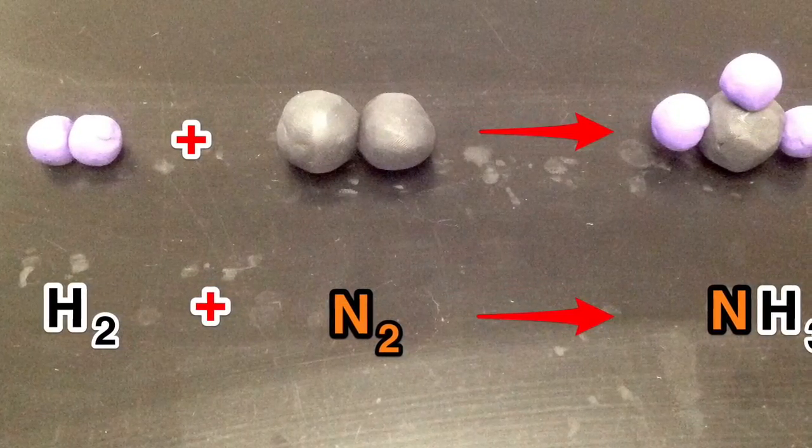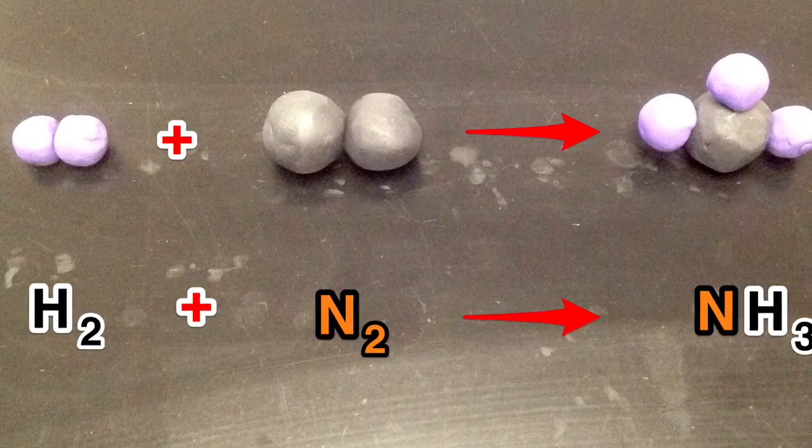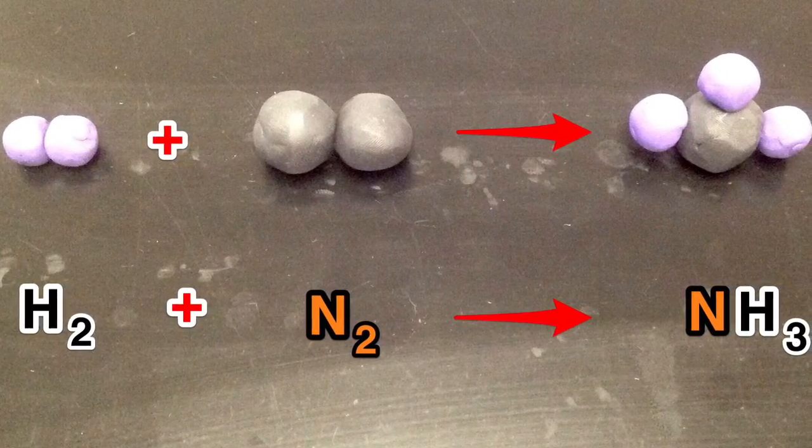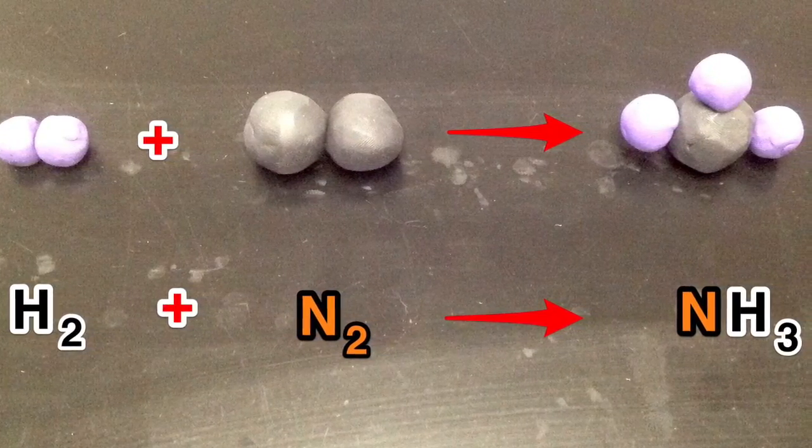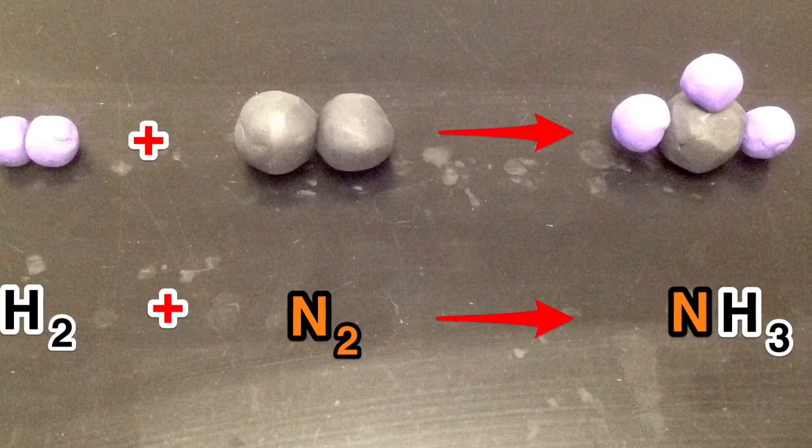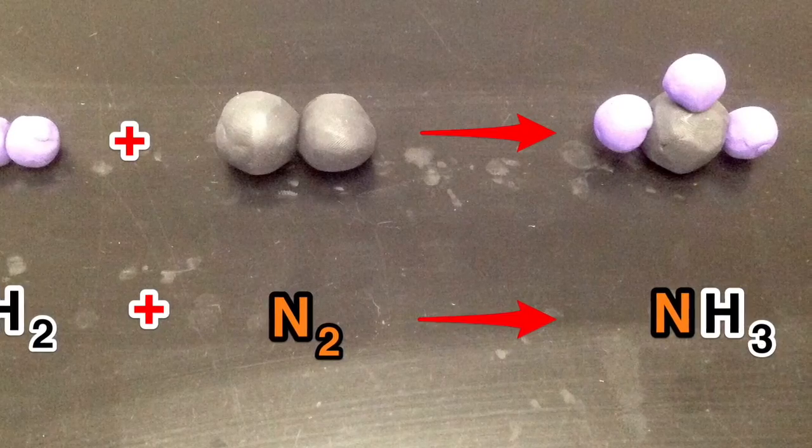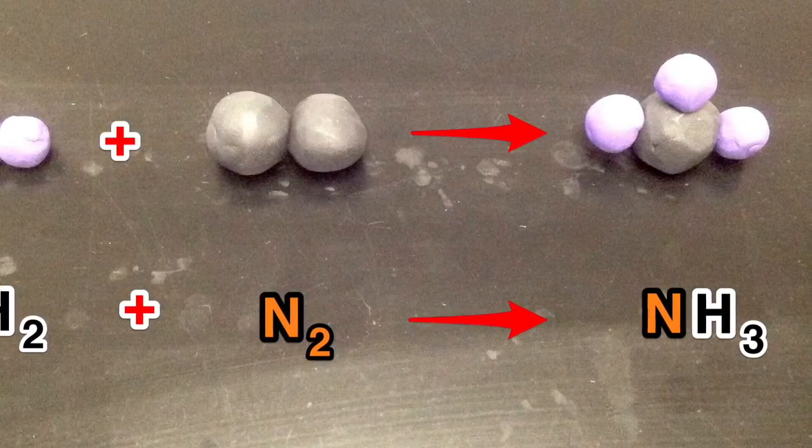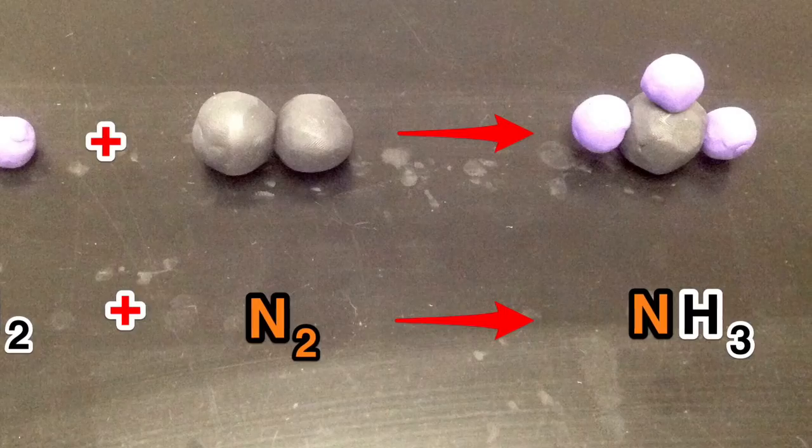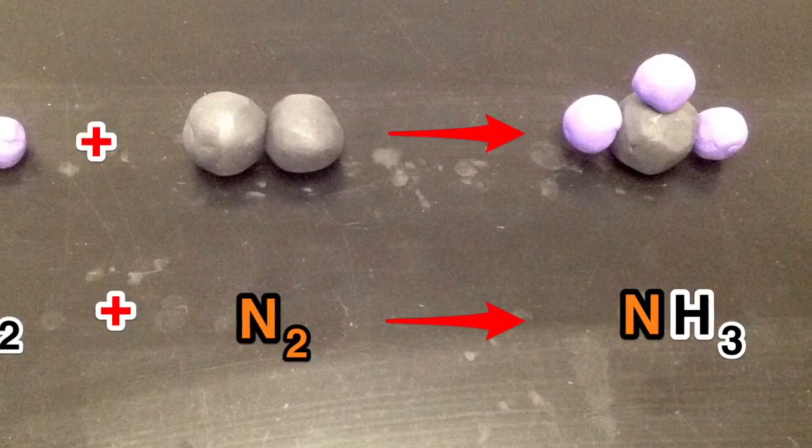When we do an atom count looking at this basic equation, we see that H2 has two atoms of hydrogen on the left, but the NH3 has three hydrogens on the right. The N2 has two nitrogens on the left, and on the right we only have one nitrogen. So this equation is not balanced.